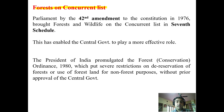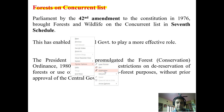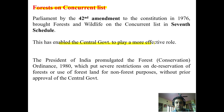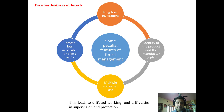By the 42nd Amendment to the Constitution in 1976, forests and wildlife were brought on to the concurrent list in the seventh schedule. This enabled the central government to play a more effective role. It is the concurrent list where both the state as well as the center have an effective role in the management of forests. The President of India promulgated the Forest Conservation Ordinance in 1980, which put severe restrictions on de-reservation of forests and the use of forest land for non-forestry purposes without the approval of the central government.